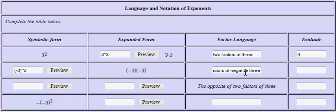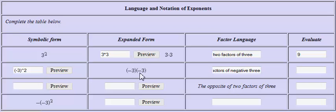You must check your spelling — you would not want to get the problem wrong because of a misspelling. To evaluate the problem, the easiest way is to look at it in expanded form. Three times three is nine, and the signs are the same, so the answer would be positive nine.